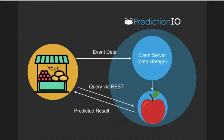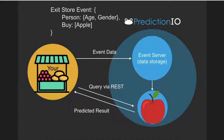The first thing that you will need to do is collect data. Therefore, when the customer finishes their shopping in your store and goes out, you will need to collect event data. The event data will contain the person's information, in this case age and gender, and of course if the customer has bought an apple or not.